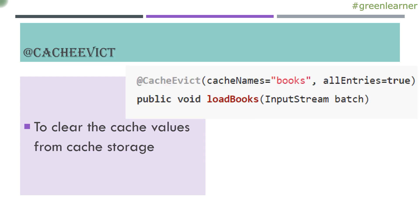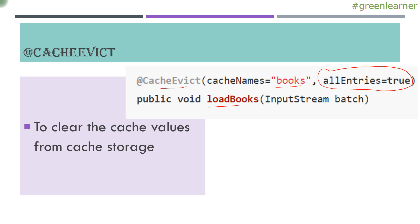Next is @CacheEvict, which is there to delete the cache information. With a method you can use @CacheEvict and specify the name of the cache to be cleared. There is an allEntries attribute set to true if you want to clear all the information in that cache. If you do not want to clear all entries and only want to clear the specific information associated with the method execution, you just leave that attribute out.